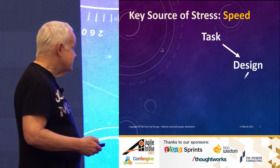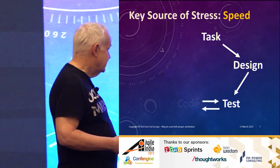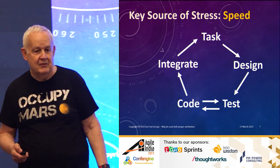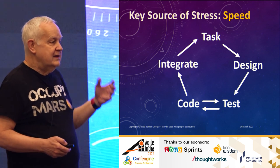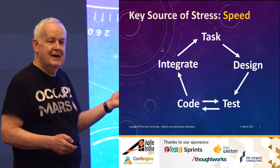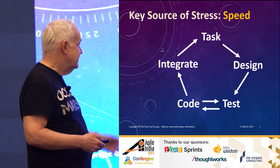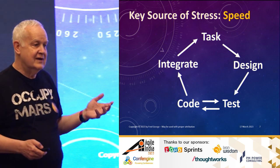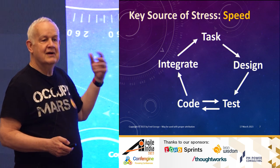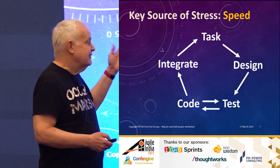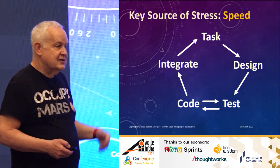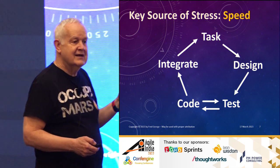So this is how we actually develop code. When we write the code, we figure out some tasks we want to work on, we do some design about it. People say you don't do design in agile — yes, we do. We think about how we're going to modify the system. We do test first, we write the code, we keep going around until we get it working, we integrate, and then we go back and pick up another task. The question is: how fast can you go through this cycle?